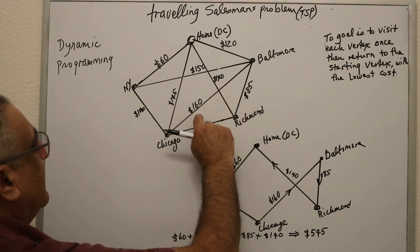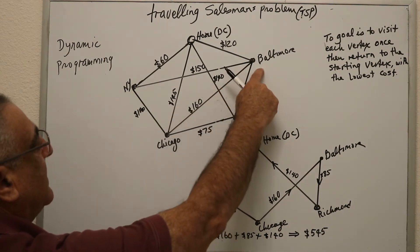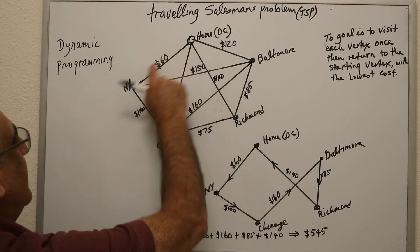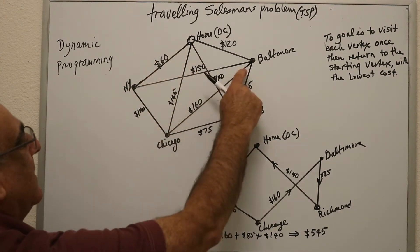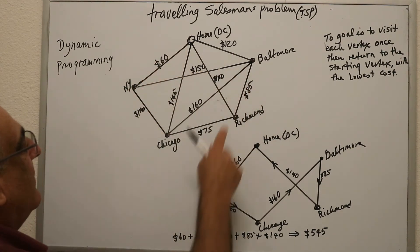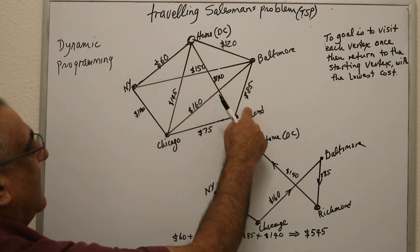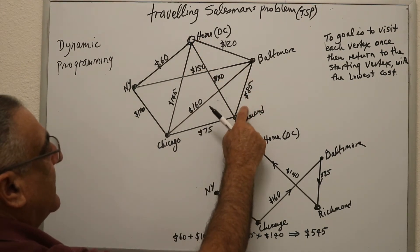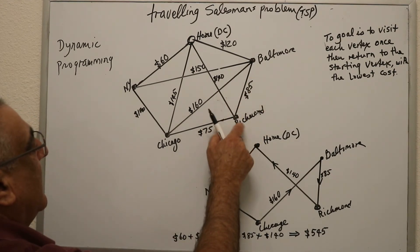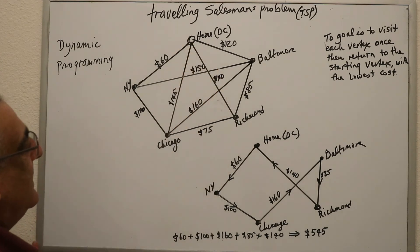So if I take this route here and I go to Baltimore, now I've gone Washington to New York to Chicago to Baltimore. Now from Baltimore I can't go back there because I left out Richmond, so I have to visit Richmond. When I visit Richmond my only choice is that I go back to DC, so I have visited all these.